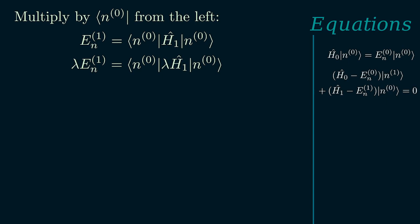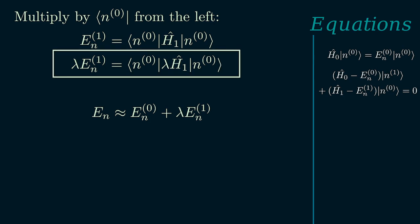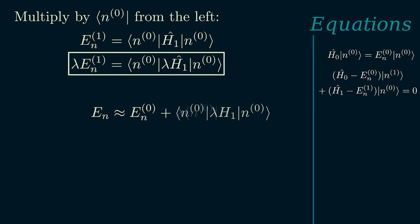This result is sometimes also written as lambda E1 equals bracket n0 lambda H1 n0. Now let's understand what we have found here. If we truncate the Taylor expansion for our energy eigenvalue En up to the first order terms, we can then write it as En0 plus lambda En1. Now what we have just found is an expression for this second term, lambda En1. Inserting the expression for lambda En1 here, we get an approximation for the eigenvalue of our original problem.